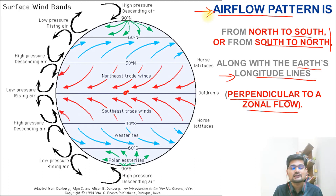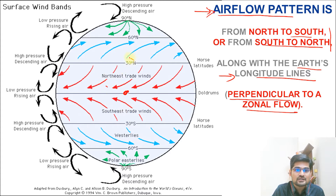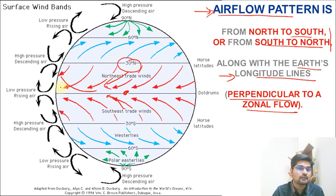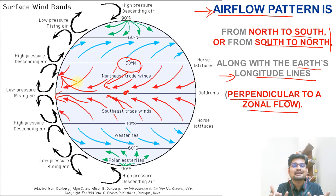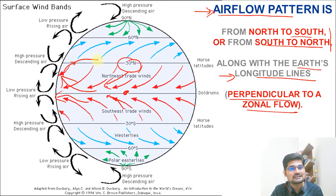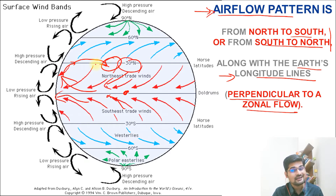In the previous lecture on pressure belts, we discussed what happens to winds. From high pressure, wind flows to low pressure. At low pressure there is maximum heating — insolation is maximum — so hot air rises up, and when it reaches a particular altitude it subsides down again, falling back at high pressure.